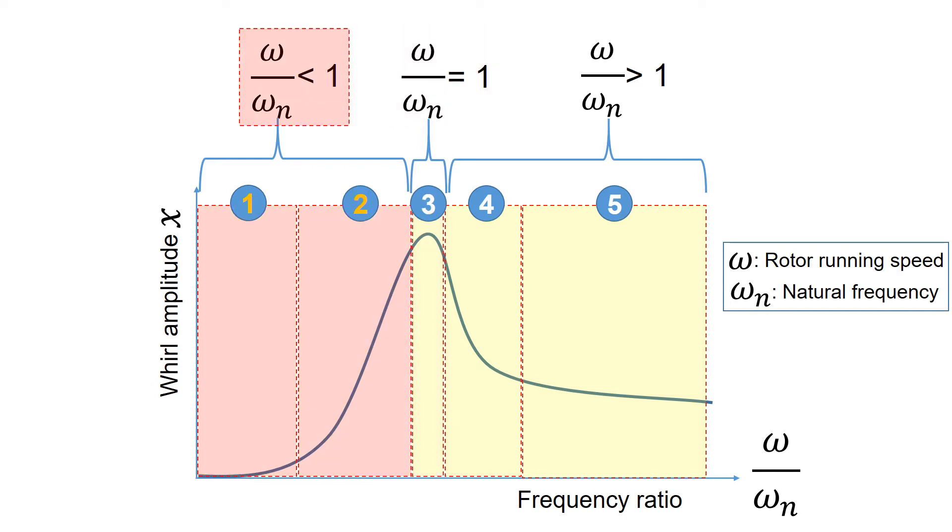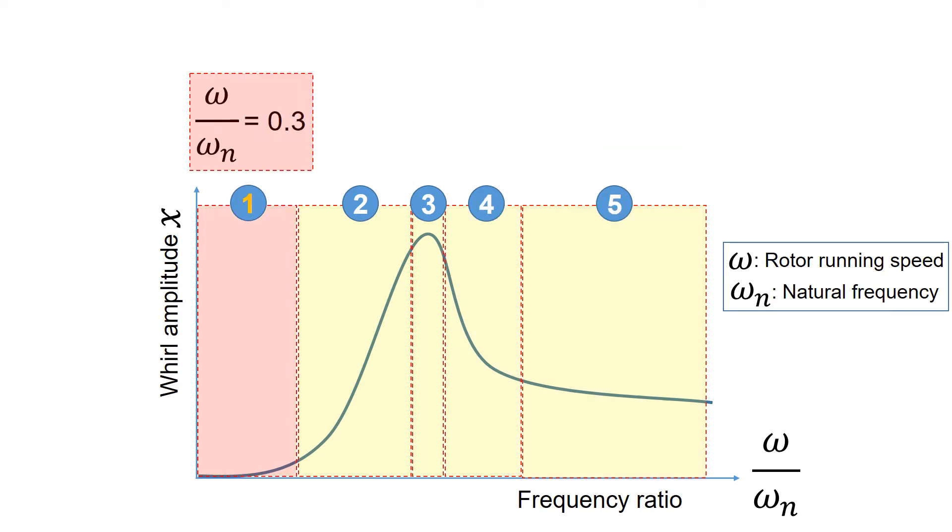If the frequency ratio is less than 1, the rotor running speed is less than the system natural frequency. And at this condition, the rotor response increases with increasing rotor running speed. If the frequency ratio is larger than 1, the rotor running speed is higher than the system natural frequency.